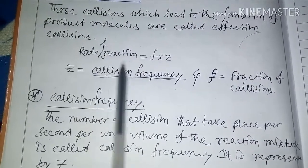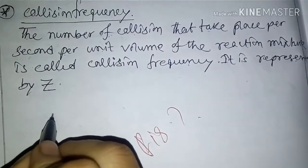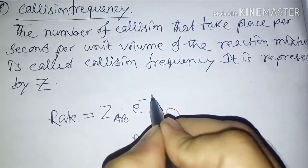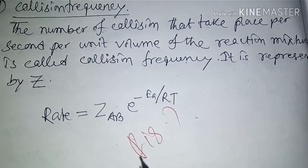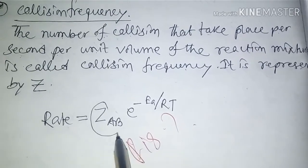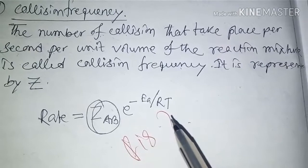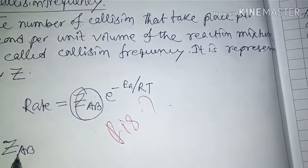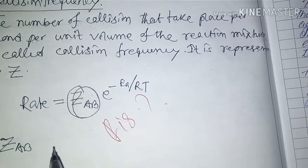The relation between collision frequency and rate of reaction is: Rate = Z_AB × e^(-Ea/RT). According to collision theory, the rate of reaction depends on collision frequency and effective collision. Here, Z_AB represents the collision frequency of reactants A and B.